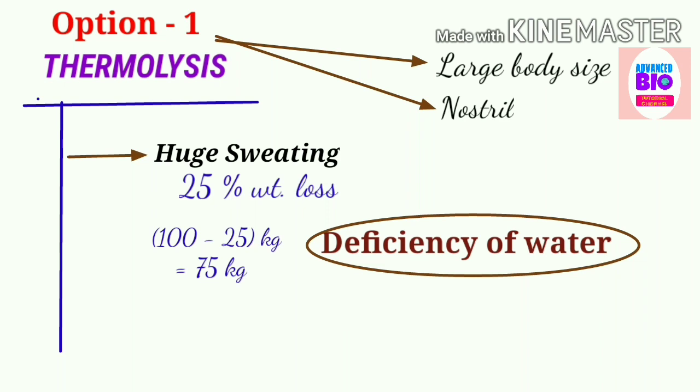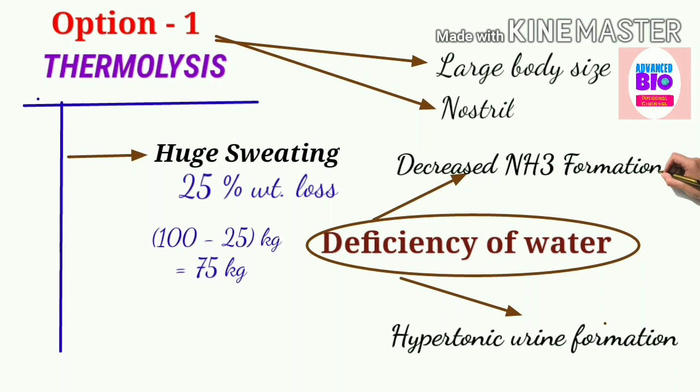Let's see the different ways or different adaptations of camel for water conservation. Number one is the hypertonic urine formation. It is said that their urine is much more concentrated than the seawater. I hope that you can realize the concentration of their urine. Now come to the next point: that is decreased ammonia formation. Ammonia formation becomes decreased since ammonia requires more water for elimination from the body through urine.